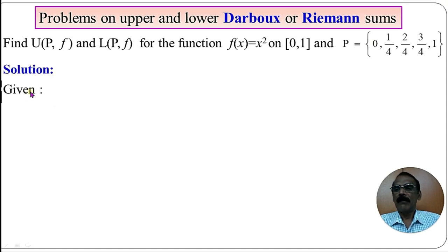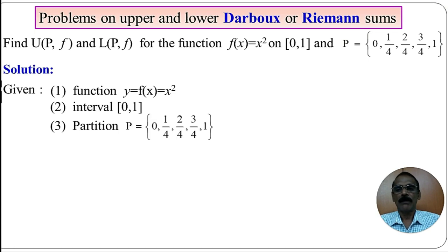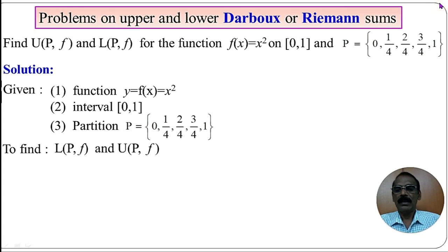What are all given? We are given the function f(x) = x². We can take y = f(x) = x². The interval is the closed interval [0, 1] and the partition is P = {0, 1/4, 2/4, 3/4, 1}. We have to find L(P, f) and U(P, f).